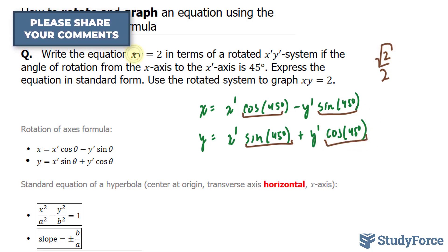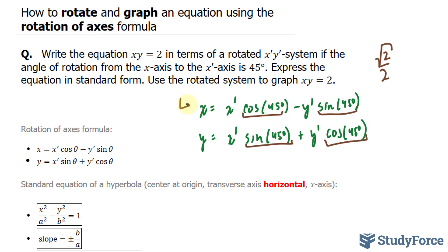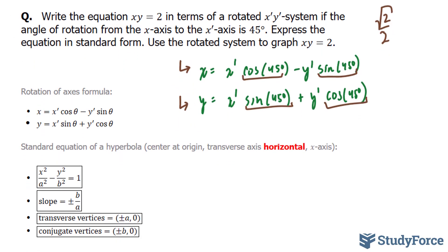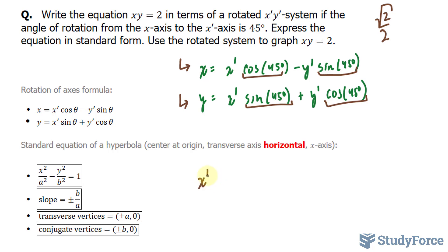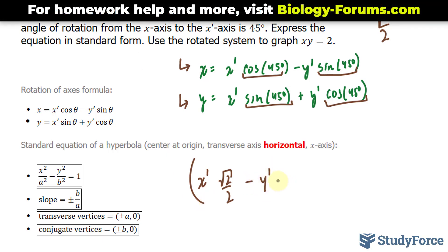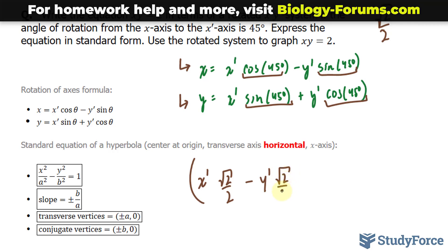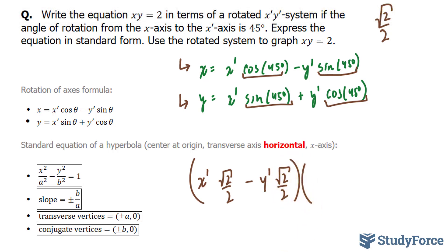In addition, this x and this y will be replaced with these two expressions. So let's go ahead and do that. We have x' · √2/2 - I'm filling in everything for x, and I'll put this in brackets - minus y' · √2/2, close bracket.